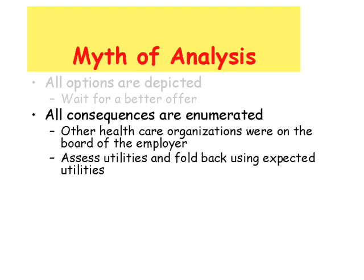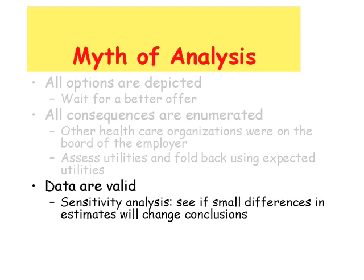For example, for this employer, they had several other healthcare organizations serving on their board. Choosing one of them would have consequences at the board level for the organization. If that's the case, we should rely on utilities and not direct cost information. A third way errors are typically made is to assume that data are correct — this is not always the case. One should conduct sensitivity analysis to see if small differences in estimates will change the conclusions.